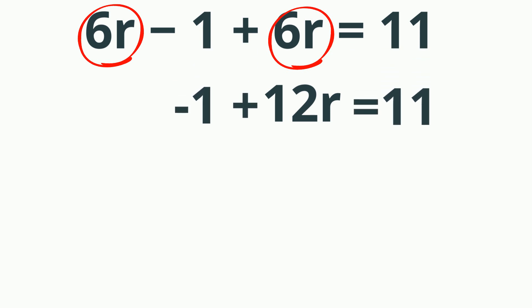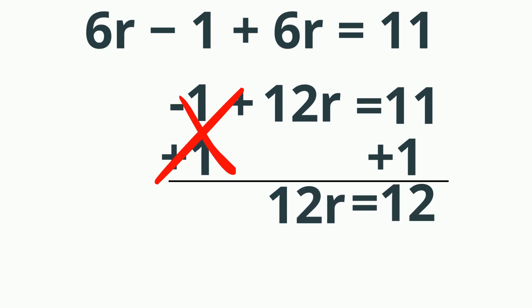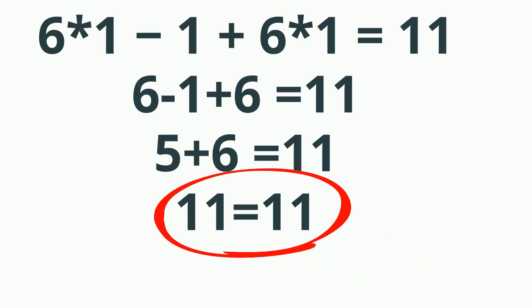Isolate 12r by adding 1 to both sides. The 12r comes down and 11 plus 1 is 12. Now I'm going to divide both sides by 12 to isolate the r. So r equals 1. And I'm going to check my work by plugging it into the original equation. And it does work out.